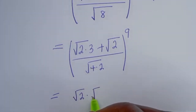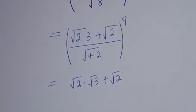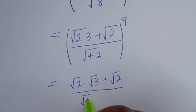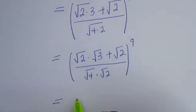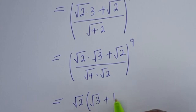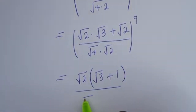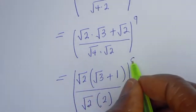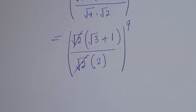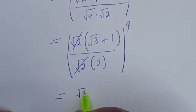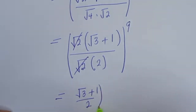This is equal to square root of 2 multiplied by square root of 3, plus square root of 2, divided by square root of 4 multiplied by square root of 2, to the power of 9. Square root of 2 is common here — let's bring it out. We have square root of 2 bracket (√3 + 1) divided by square root of 2 times square root of 4, which is 2, to the power of 9. The square roots of 2 cancel, leaving (√3 + 1)/2 to the power of 9.